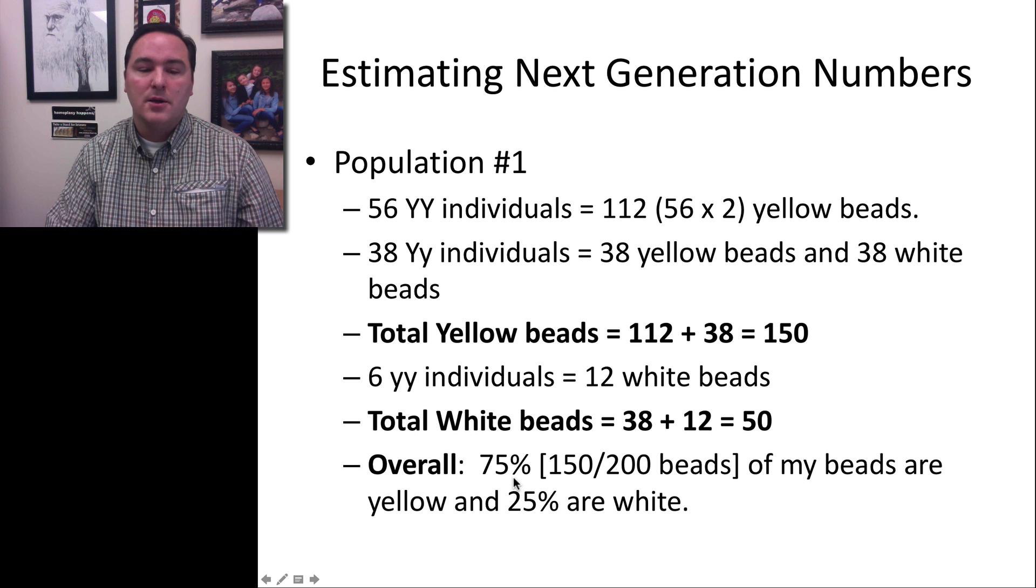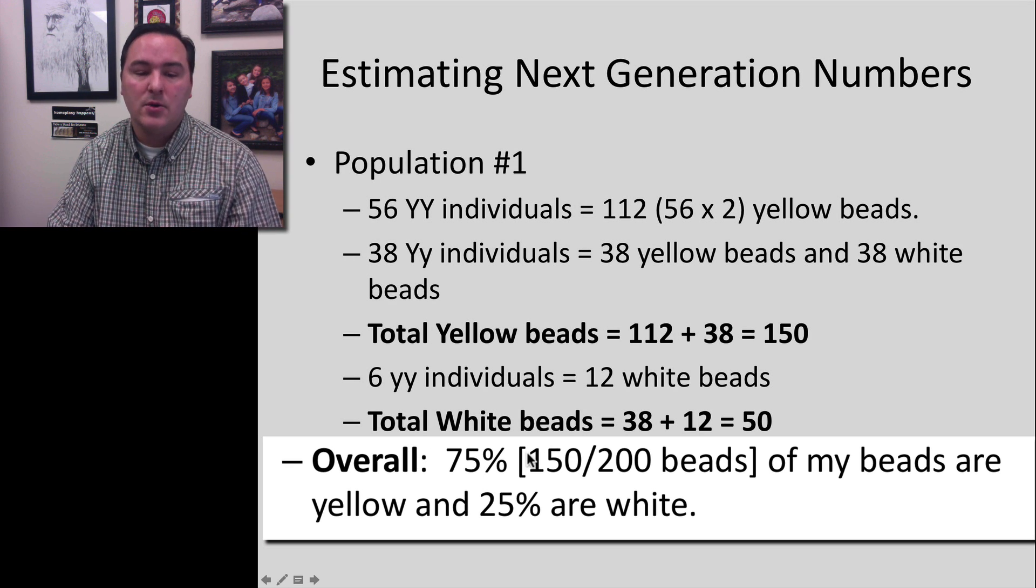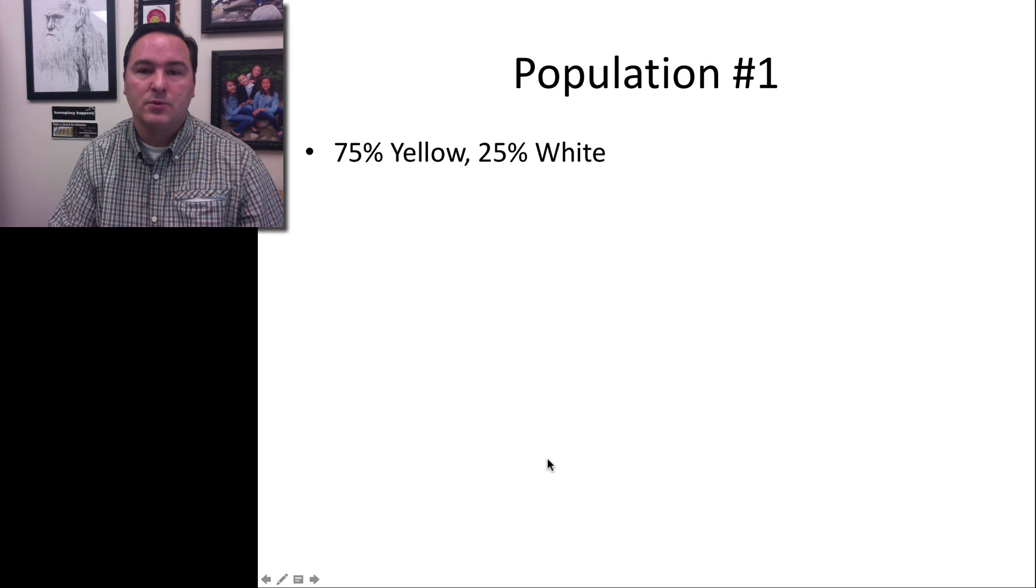So overall, there were 150 out of 200 beads. 75% of the beads were yellow, and 25% of the beads were white.